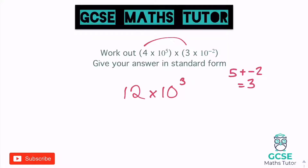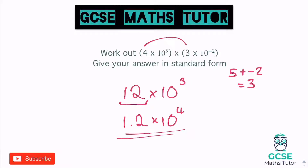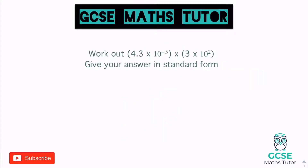12 is not between 1 and 10, so we put it in standard form. Make 12 one jump smaller to get 1.2, and balance by making the power one jump bigger — from 3 to 4. Final answer: 1.2 times 10 to the 4. Now one more example: 4.3 times 10 to the minus 5 multiplied by 3 times 10 squared.